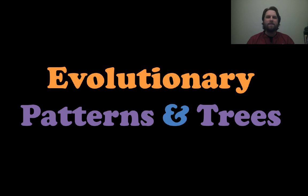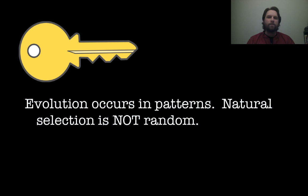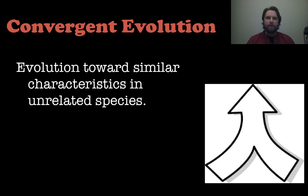Hey everyone, it's Mr. Veve and this lesson is on evolutionary patterns and trees. So let's get right into it with our first key concept: evolution occurs in patterns, and natural selection is not random at all. So let's look at some of these patterns, beginning with convergent evolution.